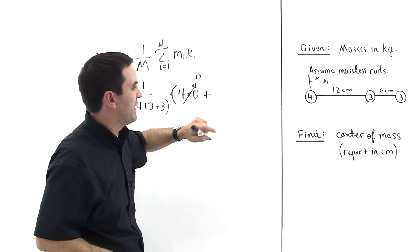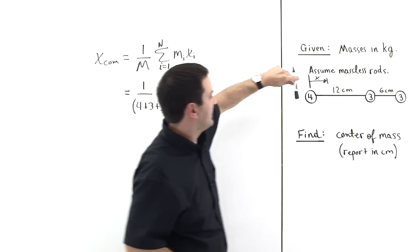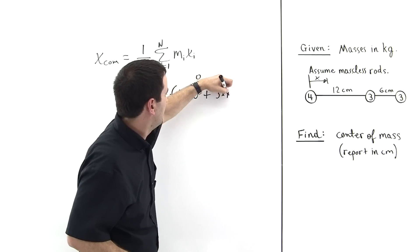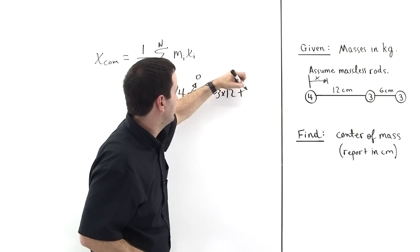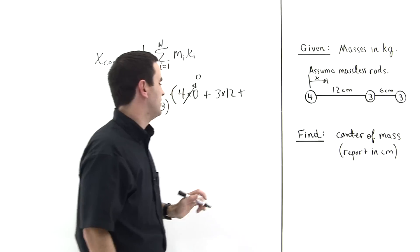Plus the next mass is three, and it's multiplied times the distance from the origin, which is twelve. So three times twelve centimeters. And we're using centimeters because we're being asked to report the answer in centimeters.